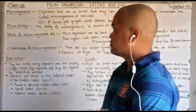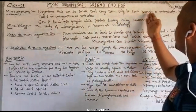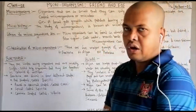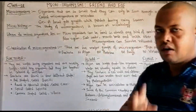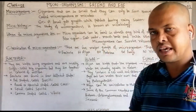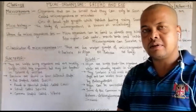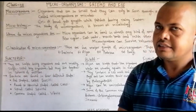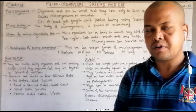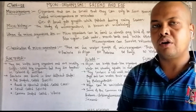Microorganism: Organisms that are so small that they can only be seen through a microscope are called micro-organisms or microbes. Waise jeev jinhein hum microscope ki sahayata se dekh sakte hain, unhe micro-organism ya microbes kehte hain. Yaani aise organism jo hum apni nanghi aankhon se nahi dekhte, jinhe dekhne ke liye ek special instrument jise hum microscope kehte hain, uski sahayata lete hain, unhe hum log micro-organism kehte hain.